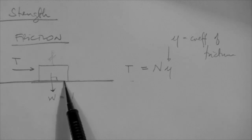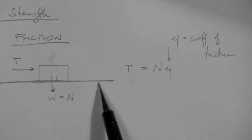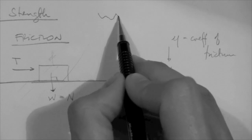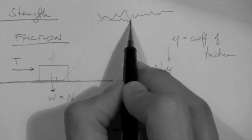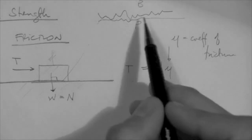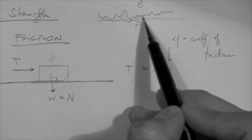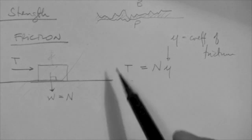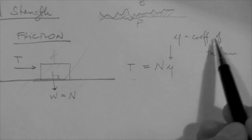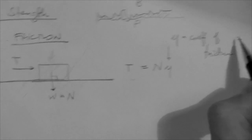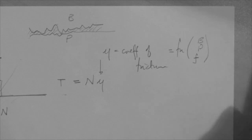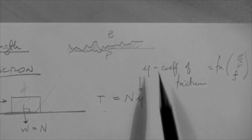Now, what's at this interface? There are three things: the block, the material that makes the plane, and also — if you take a zoom of this — it is likely to look like an irregular surface. It's not perfect smoothness, so there is fluid in here, between those two surfaces, in the pores comprised by the interface between the block and the plane. In this case, we could say that fluid is air. So the coefficient of friction would be a function of the material that makes the block, the material that makes the plane, and the fluid in the pores at the interface.